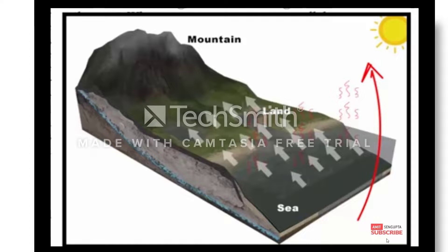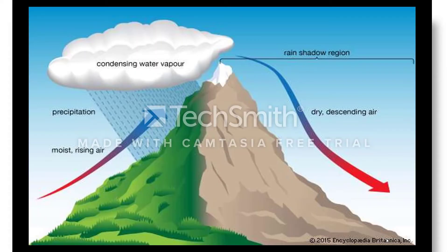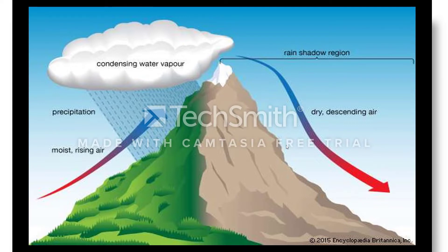We have studied this in our earlier classes. As warm air cools, the water vapour present in it starts to condense. Clouds are formed and rainfall occurs. As the air reaches the summit of the mountain, it begins to descend. The temperature decreases as we go up towards the mountain and increases as we come down, increasing the moisture content. There will be no rain on the descending side of the mountain. This area is called the rain shadow region, or relief rain. Look at the image here — condensing water vapour, precipitation, and moist air rising. This part is called the rain shadow region because there is no rainfall there.